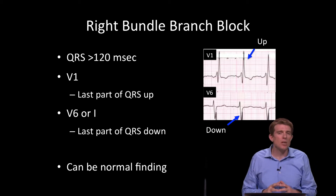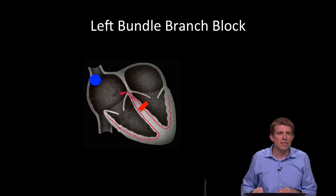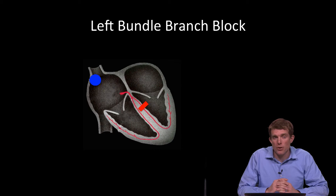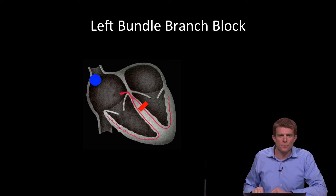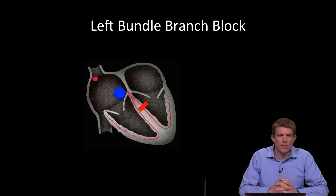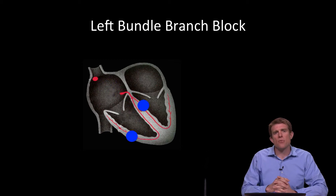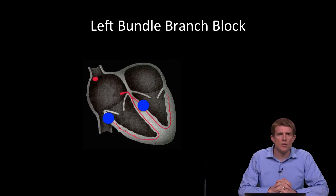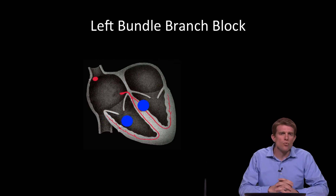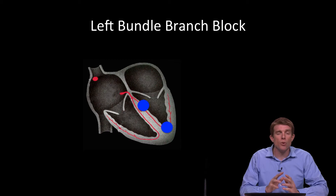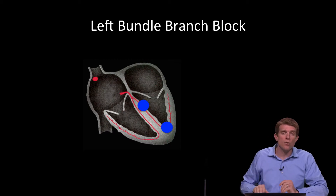This can be a normal finding, and that's in contrast to a left bundle branch block. In a left bundle branch block, your electrical activity comes from the SA to the AV node, down the pathway, blocked on the left side, so the right side depolarizes. Then once the right side is depolarized, the electricity gradually comes across from the right to the left side, depolarizing the left side of the heart slowly.